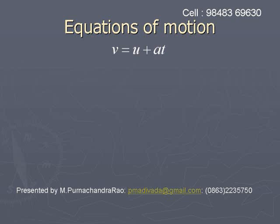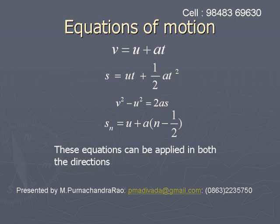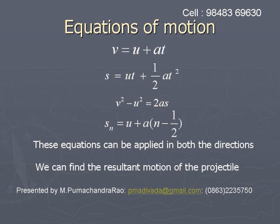Equations of motion. The kinematic equations are: v = u + at, s = ut + ½at², v² - u² = 2as, and sₙ = u + a(n - ½). When a projectile is travelling, its motion can be studied in two directions — one along the x-axis and the other along the y-axis. By applying these equations in both perpendicular directions, we can find the resultant motion of the particle, that is the projectile.